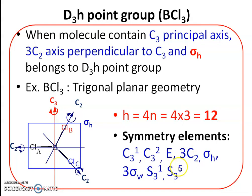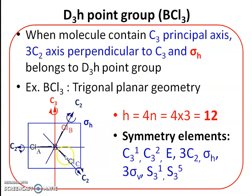This concludes the discussion of the D3H point group for boron trichloride. In the next video we will discuss the possible C3 operations of the D3H point group and the operations for the C2 axes of symmetry.